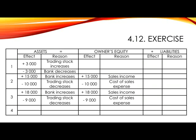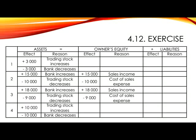Number 4: Bought stock, paid R10,000. This is quite straightforward and very similar to number one. Your two accounts involved are trading stock and bank, both assets. In assets, you will show plus R10,000 as trading stock increases and minus R10,000 as bank decreases.